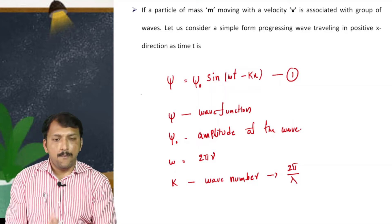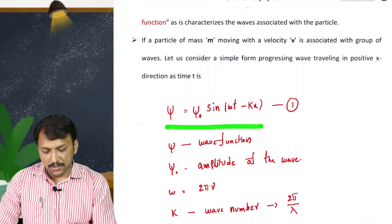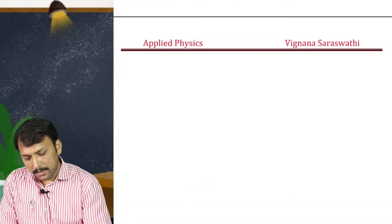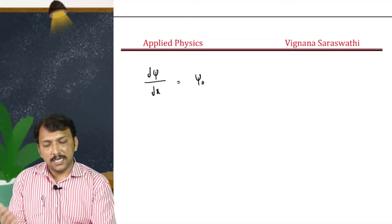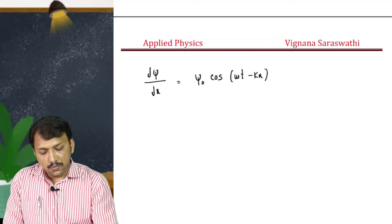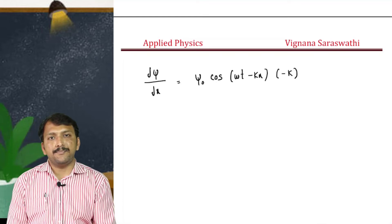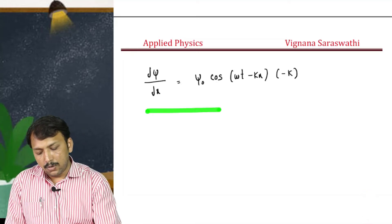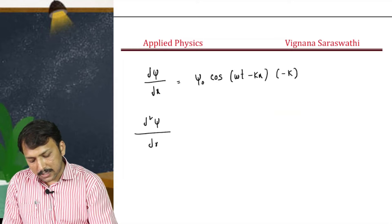Now we will apply partial differentiation on equation one with respect to x. By doing the first partial differentiation we get: d-psi/dx equals psi-naught times cos(omega·t minus k·x) times (minus k). Then we apply partial differentiation again to obtain the second derivative.